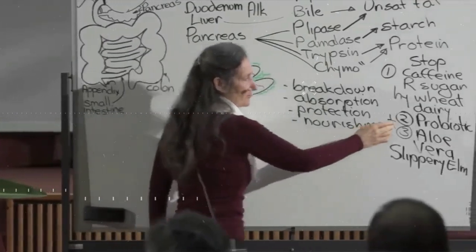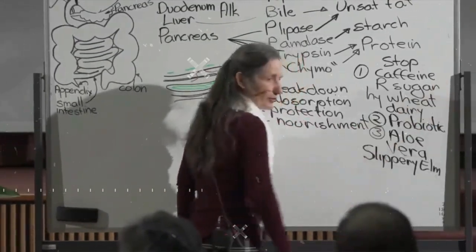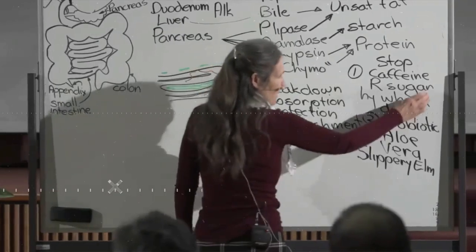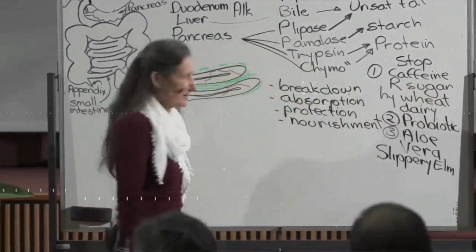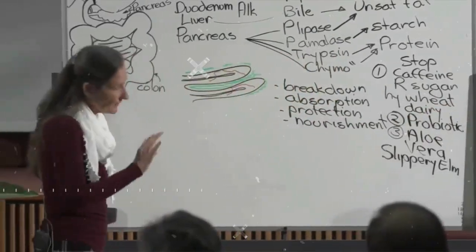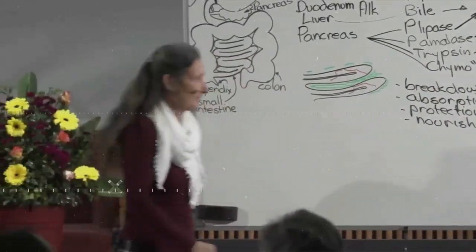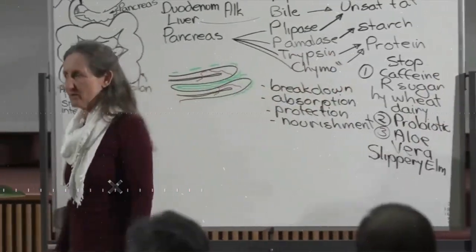She had coconut cream on her breakfast instead of cow's milk. She had a bit of honey on her breakfast instead of sugar. She stopped the wheat and bought some spelt sourdough bread. I think she had some millet for breakfast instead of oat. Some can handle oats, some cannot. She started to have a dandelion instead of a coffee. She immediately implemented.